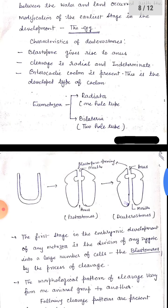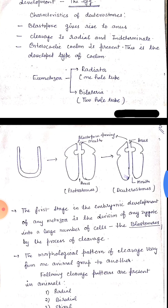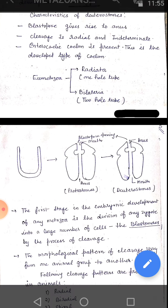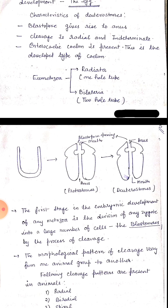What are the characteristics of deuterostomes? These are the characteristics of deuterostomes: blastopore gives rise to anus, and cleavage is radial and indeterminate.